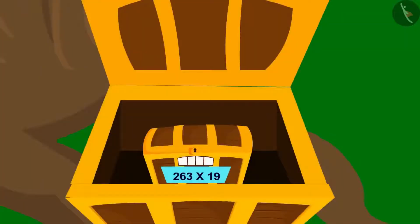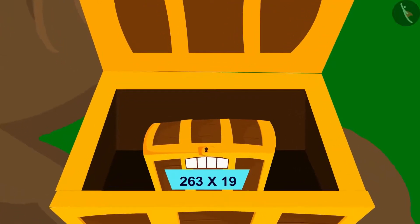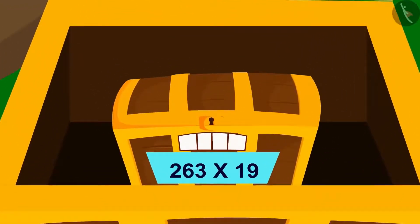But what is this? There is another box inside this box and this box too has a four-digit lock just like the first box. This time, this multiplication is written under the lock.